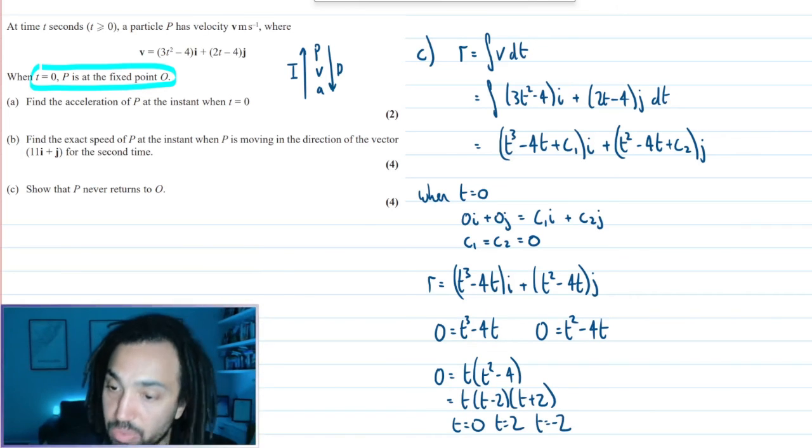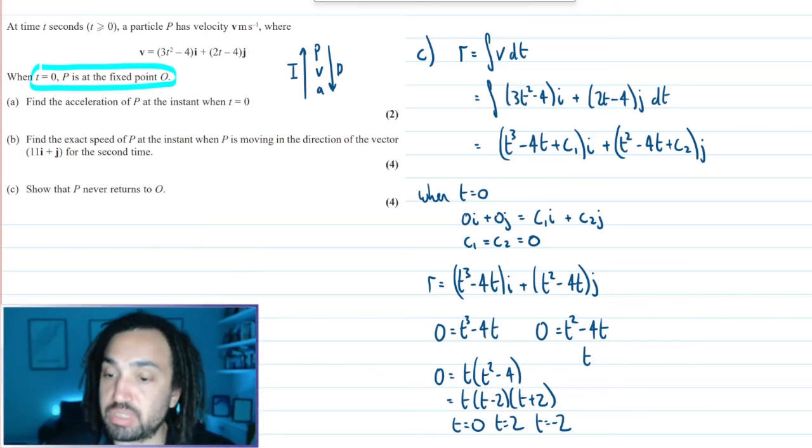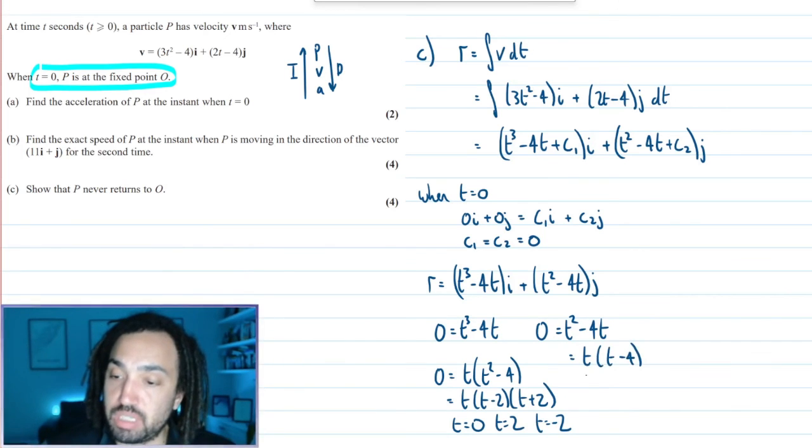And what about the j components? When are they equal to 0? Well, I get t, t minus 4. So I get t is equal to 0 and t is equal to 4.